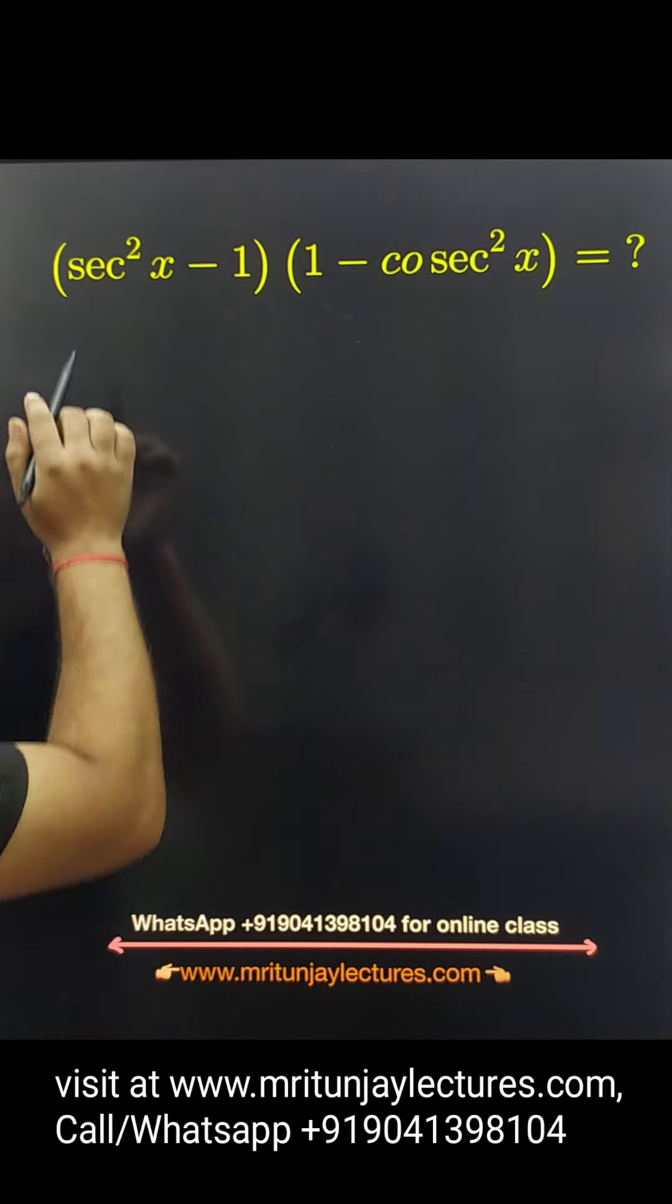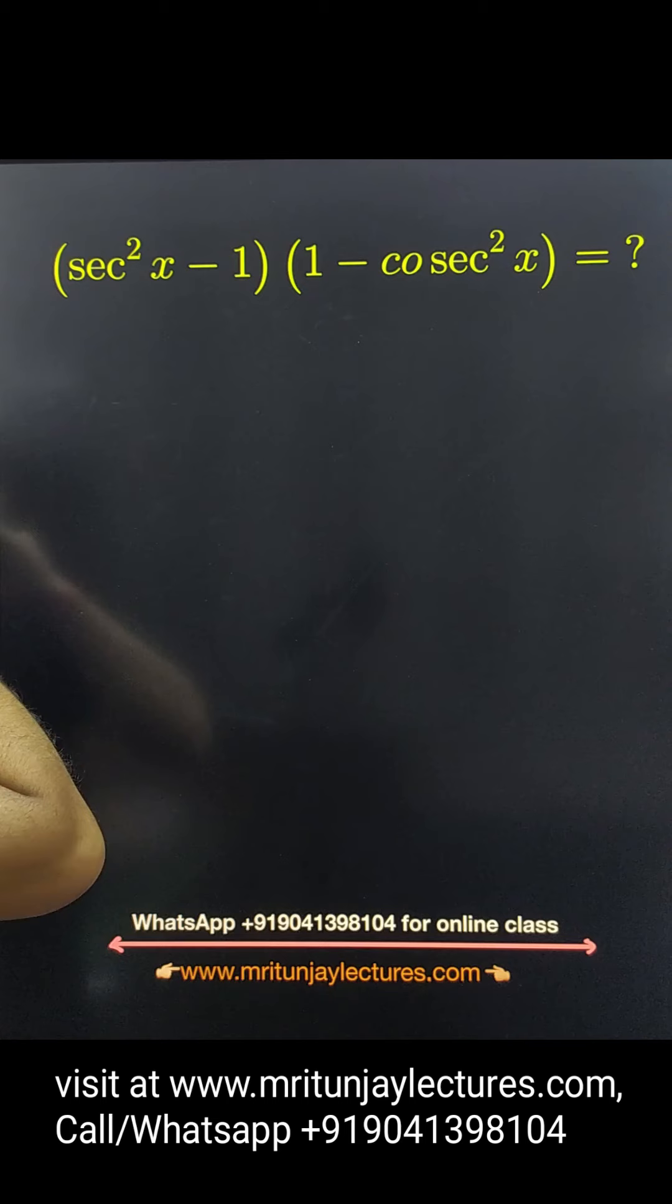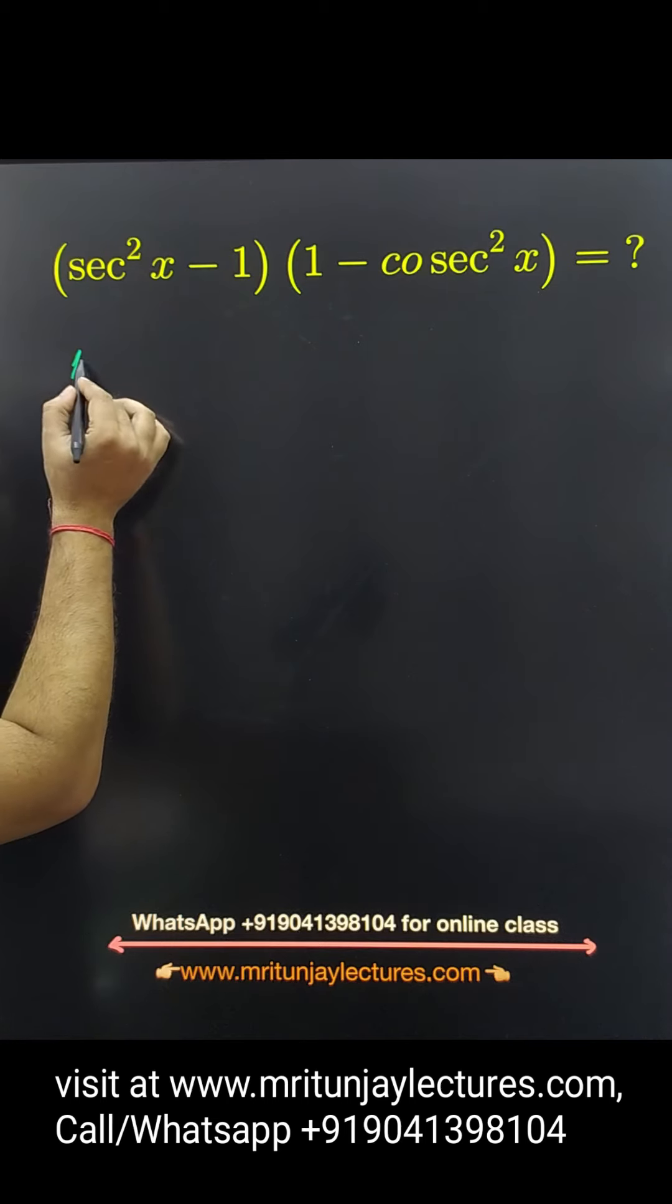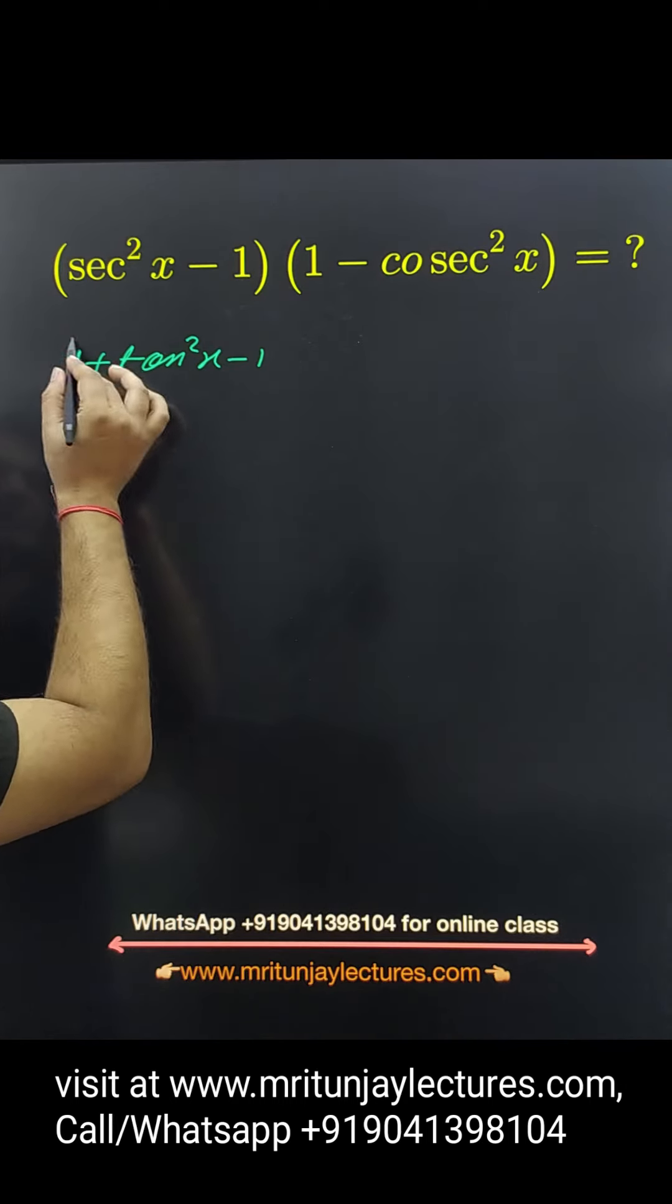Now question of the day, our motive to define that value, simply sec square x minus 1. I know that sec square x basically 1 plus tan square x, here minus 1.